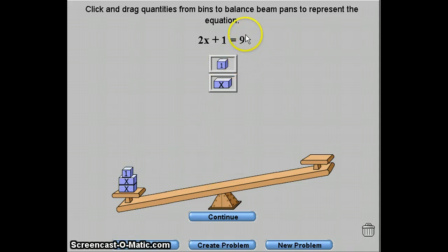And then the right side of the equal sign is the amount I'm going to have on the right arm of the scale. So in this case I have 9, so I'm going to put nine boxes labeled with 1.